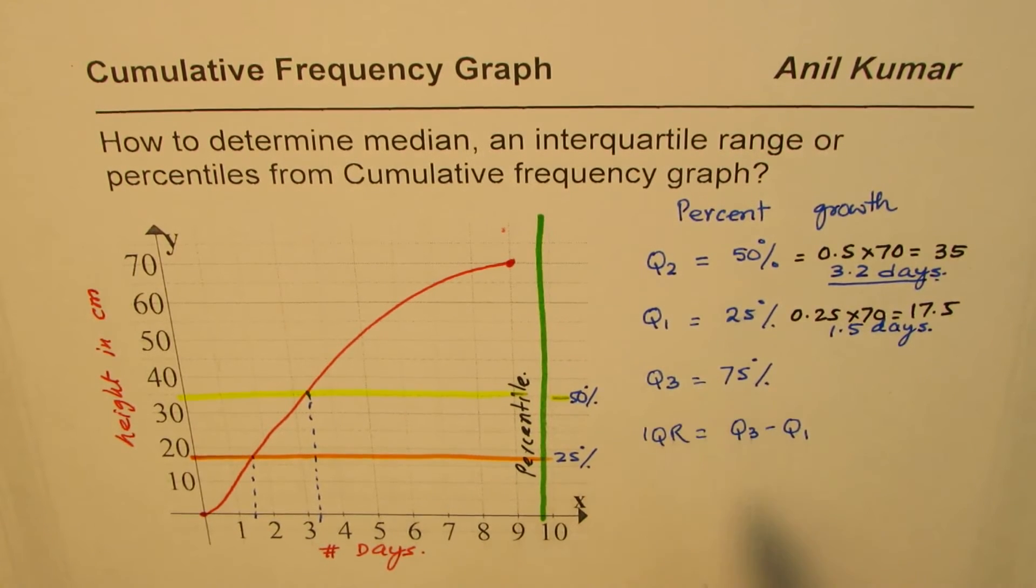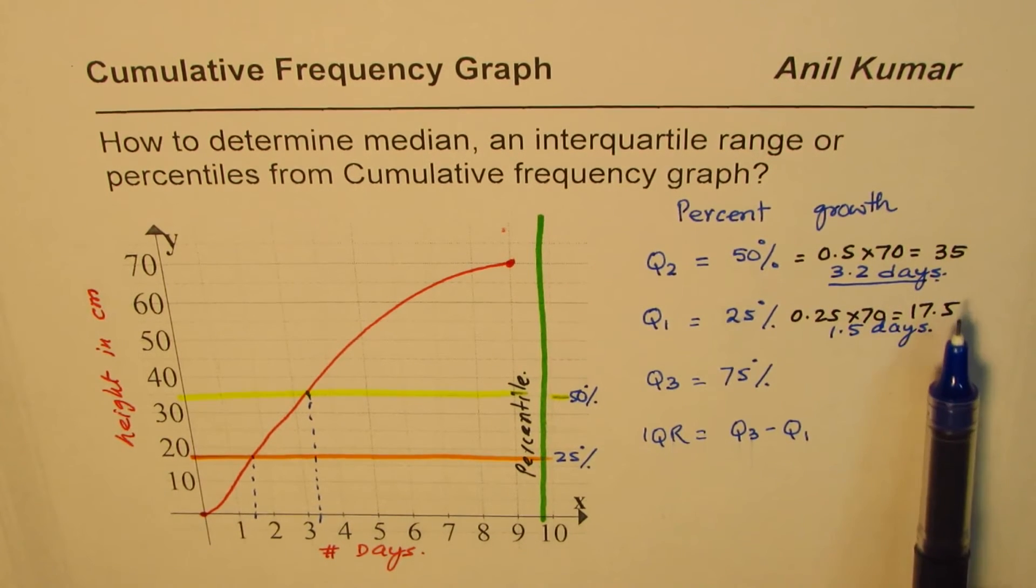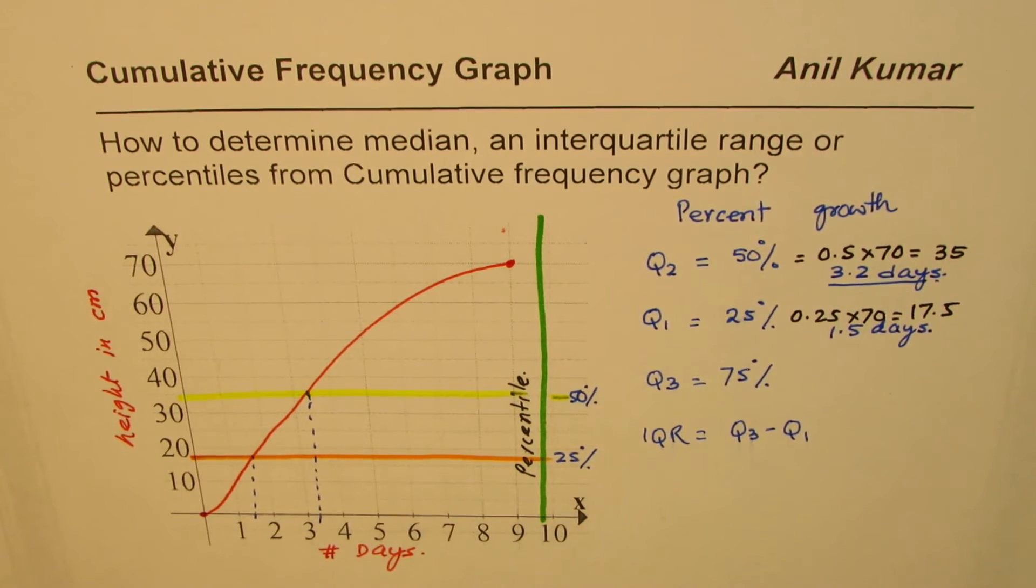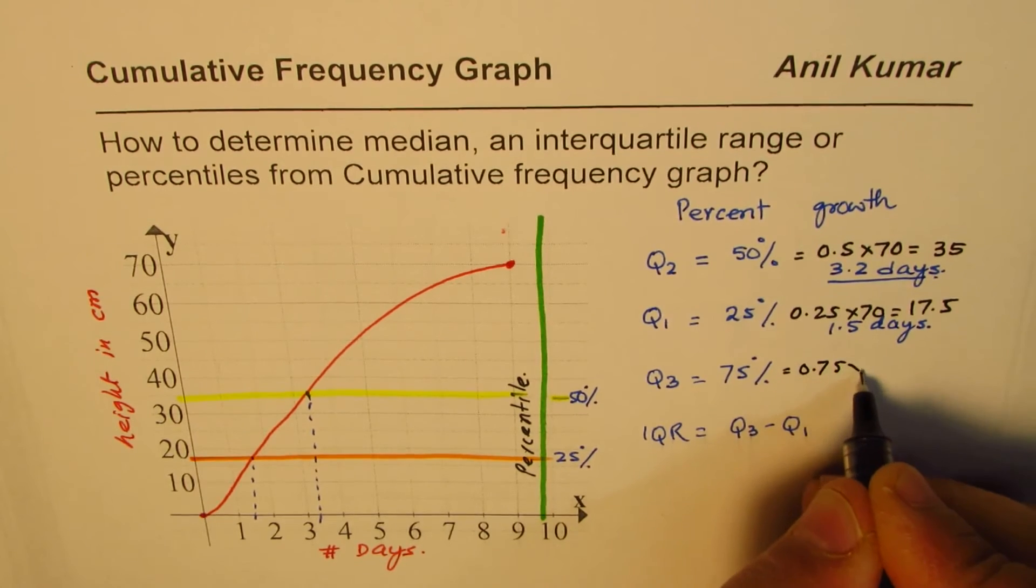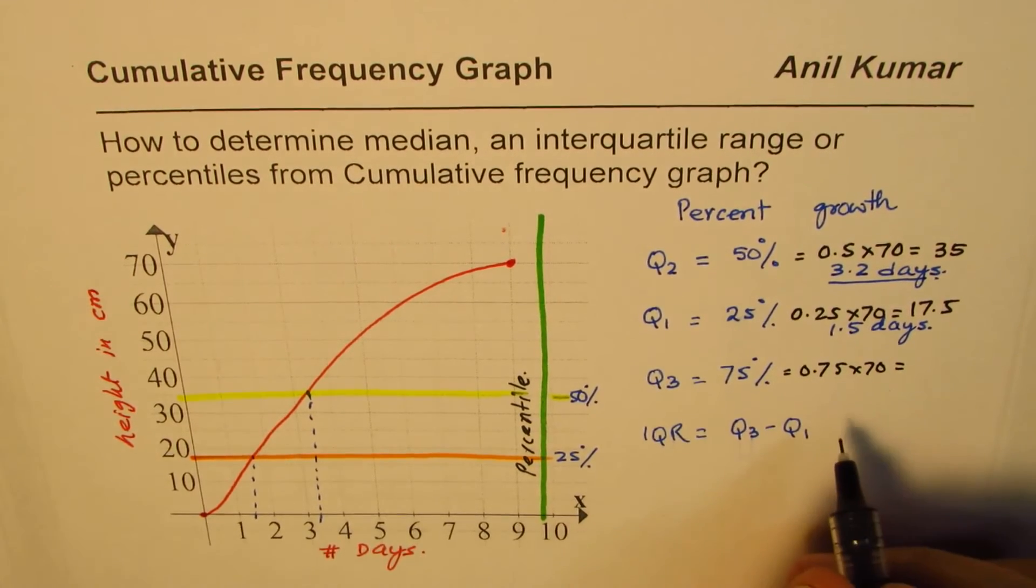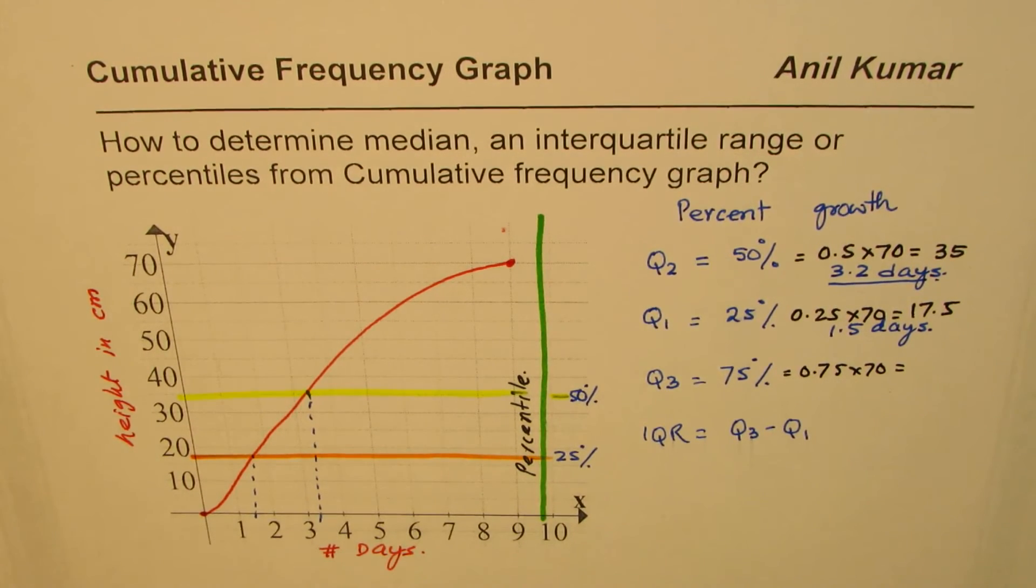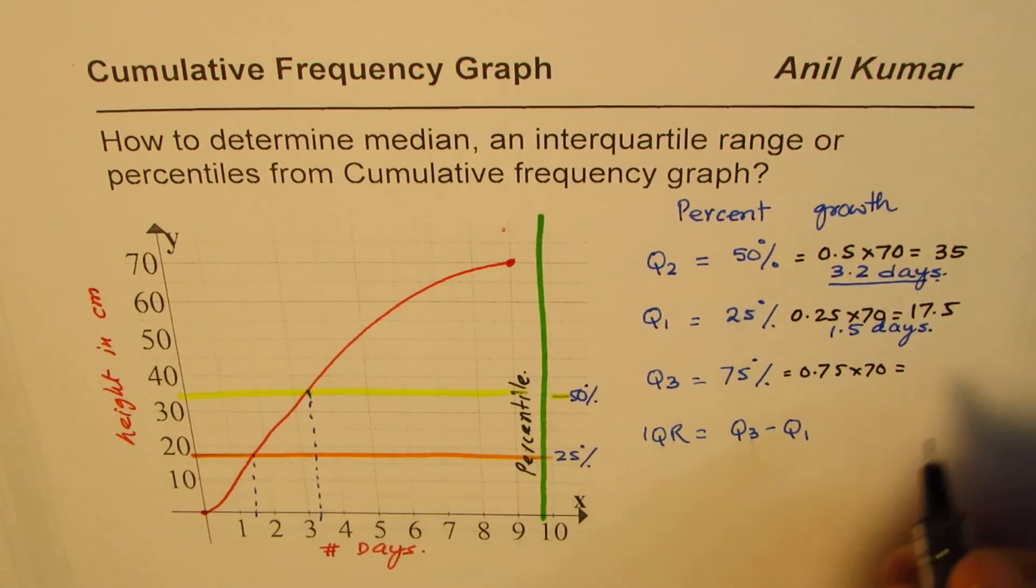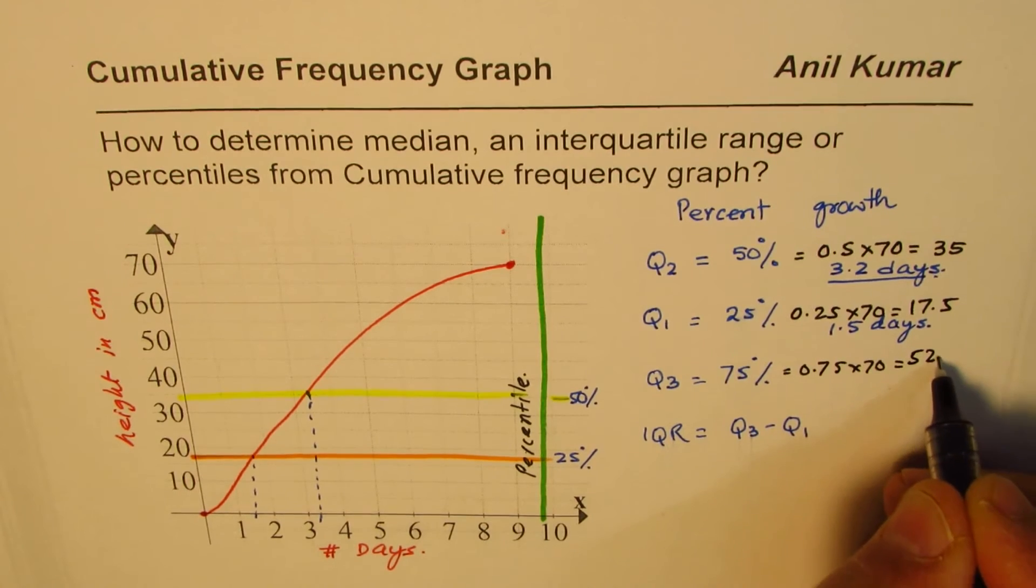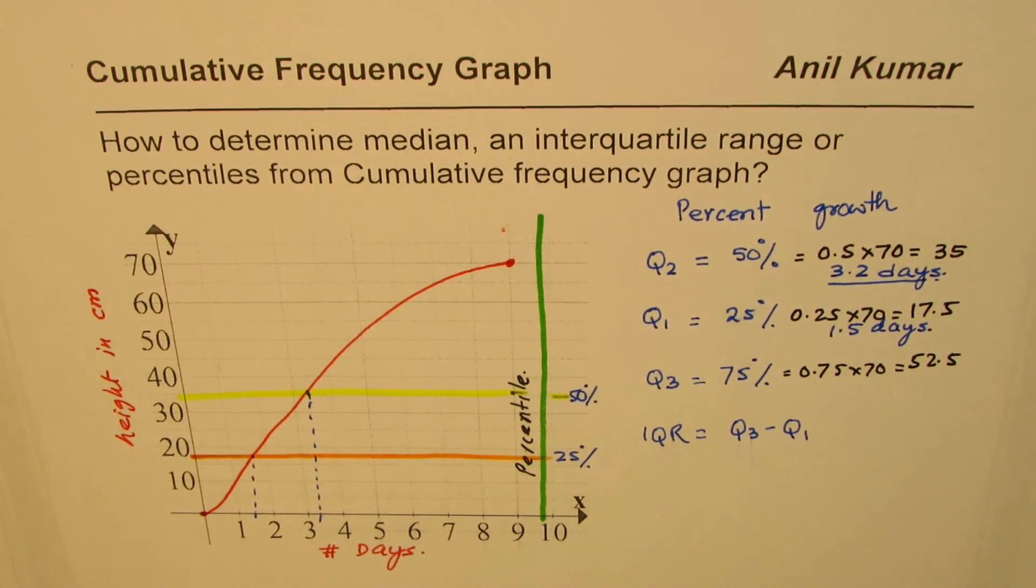For 75% it is 3 times 17.5, or you can add this up, or you could calculate using calculator which is 0.75 times 70. So let's use the calculator, any method could be adopted. 0.75 times 70 is 52.5. Let me write it down, so we have 52.5. So let me draw a line for 52.5.